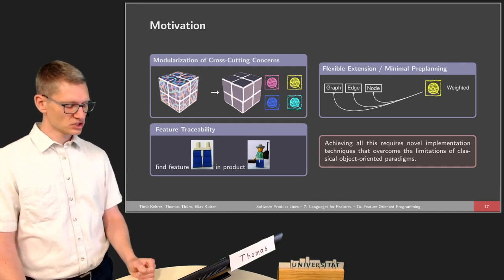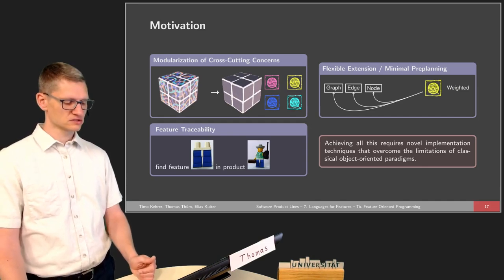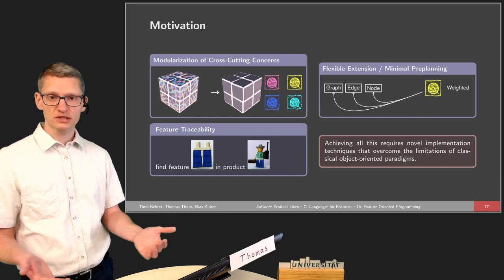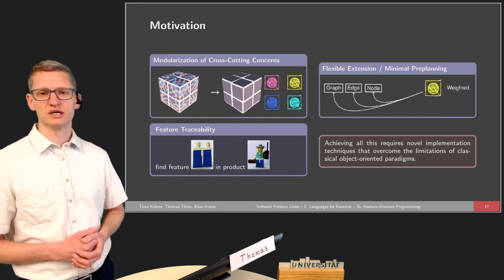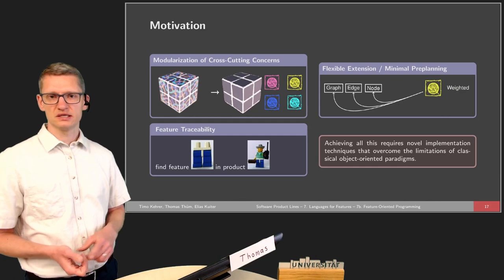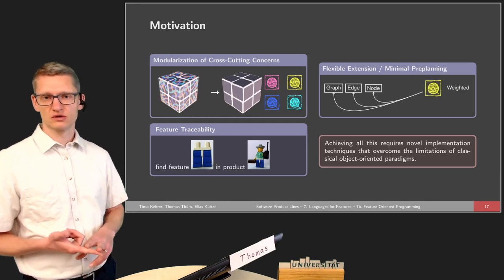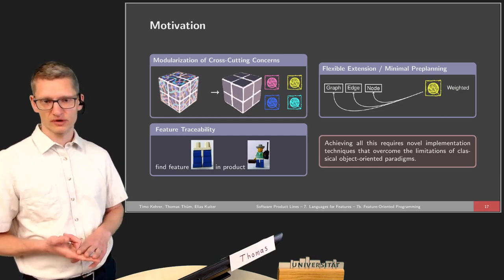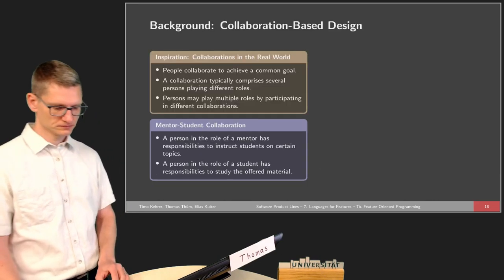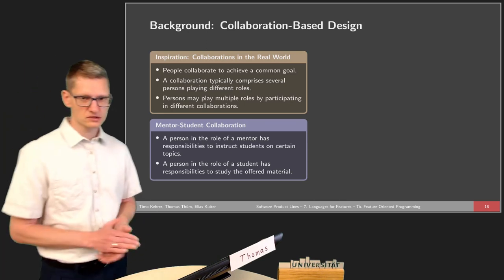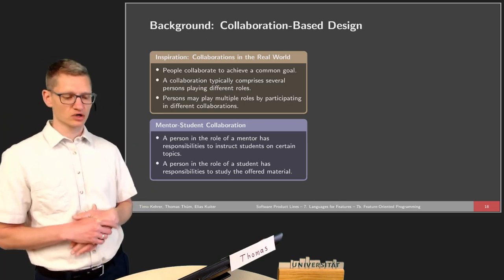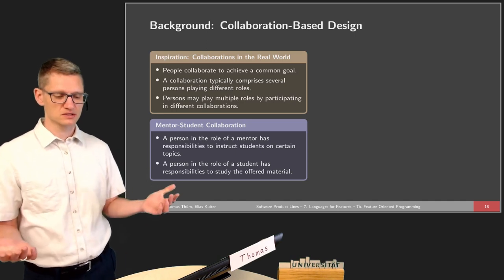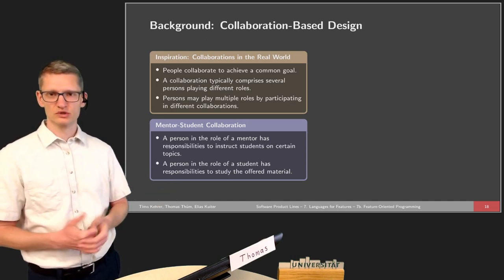Achieving all this requires novel implementation techniques that overcome the limitations of classical object-oriented paradigms, but also the limits of existing techniques like components, services, or frameworks. The background of feature-oriented programming is that of collaboration-based design, inspired by collaborations in the real world.